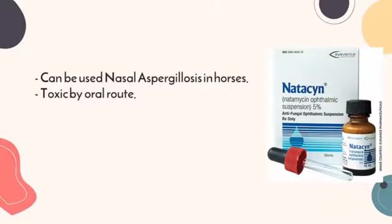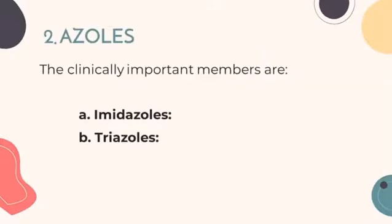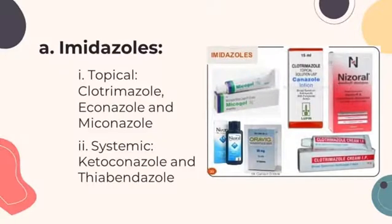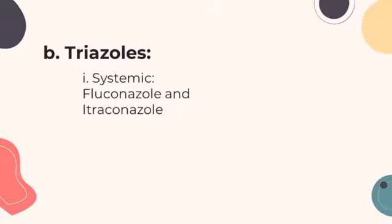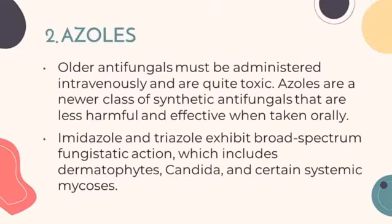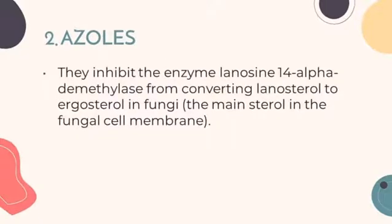Natamycin is toxic if given orally. The next type of systemic agents is the azoles, which has two clinically important members: the imidazoles and the triazoles. Imidazoles are classified into topical — including clotrimazole, econazole, and miconazole — and systemic, composed of ketoconazole and thiabendazole. Triazoles are classified as systemic, composed of fluconazole and itraconazole. They are a newer class of synthetic antifungals that are less harmful and effective when taken orally, exhibiting broad-spectrum fungistatic action against dermatophytes, Candida, and certain systemic mycoses. They inhibit the enzyme lanosterol-14-alpha-demethylase from converting lanosterol to ergosterol in fungi, which is the main sterol in the fungal cell membrane.